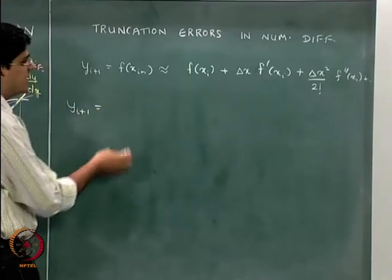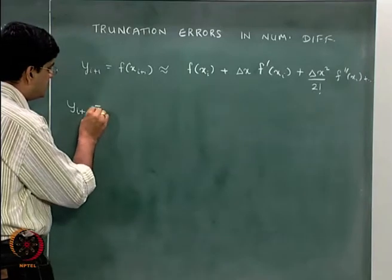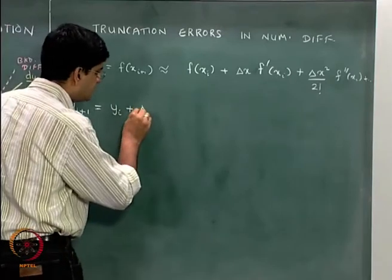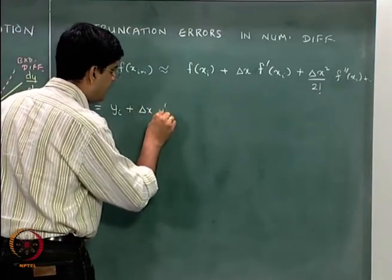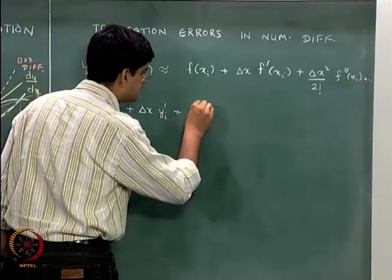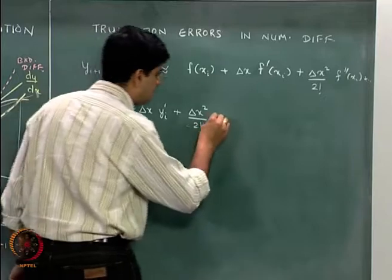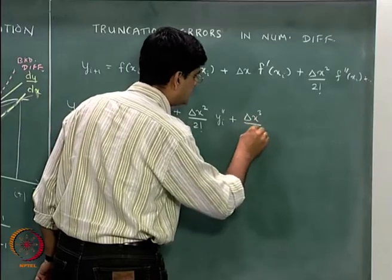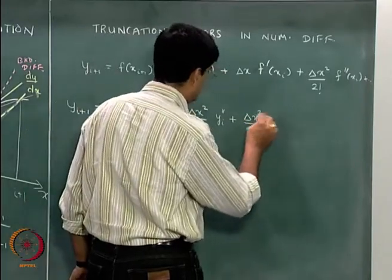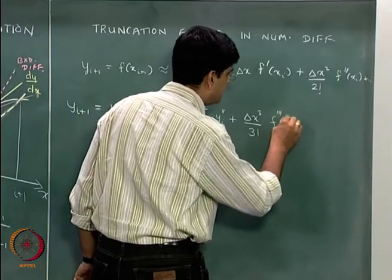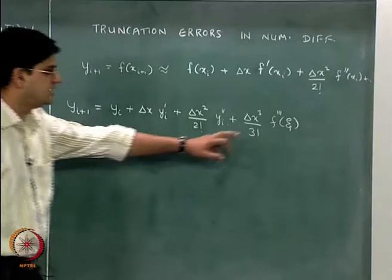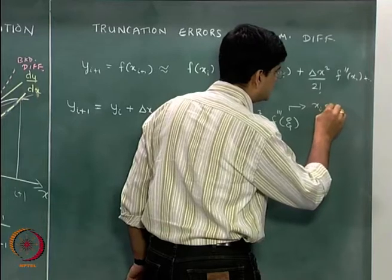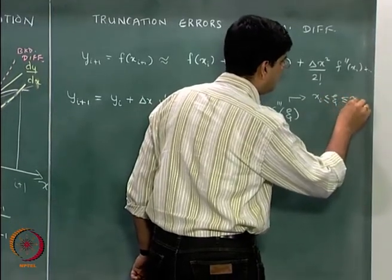I will write y(i+1) again in shorthand notation. y(i+1) is equal to y(i) plus delta x multiplied by y'(i), plus delta x squared by 2 factorial multiplied by y double dash i, plus delta x cubed by 3 factorial multiplied by f triple dash of zeta, where zeta is some point lying between x(i) and x(i+1).